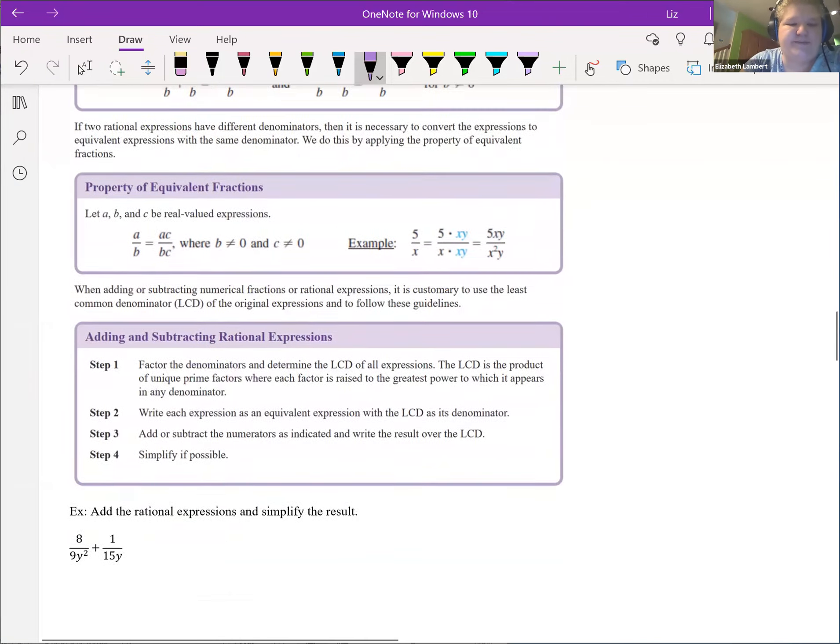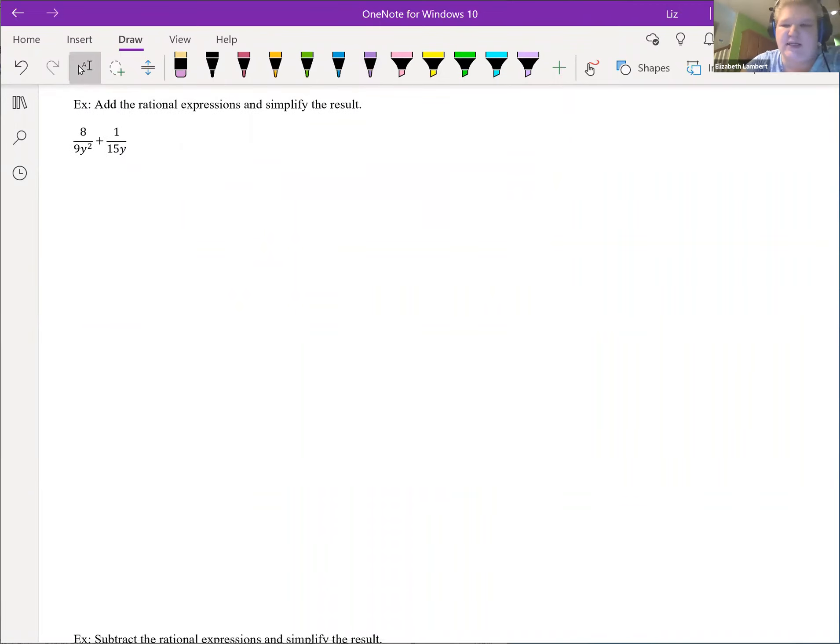In order to add or subtract these, we need the denominators to be the same. There's two ways to think about this. You could identify what the lowest common denominator is, or you can just focus on what does one have that the other doesn't have, and then give the other the thing it doesn't have. That's the way I usually do it. But figuring out the LCD works because when we do the equations, that's what we'll do. So 9y squared versus 15y.